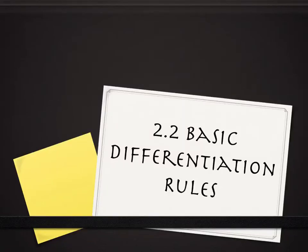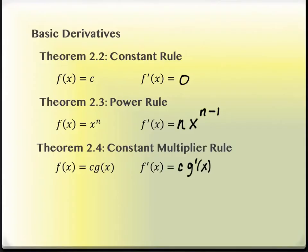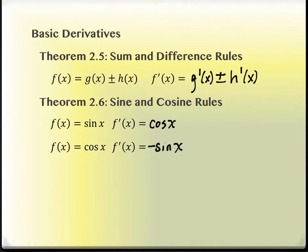We're on section 2.2. We started it last time, and as a quick rundown, we have several new basic derivative rules. The first: the derivative of a constant is 0. The power rule: the derivative of x to the n is nx to the n minus 1. The constant multiplier rule says a constant comes along for the ride when you take the derivative of the function. Sum and difference rules say you take the derivative of each piece and combine them. And the derivative of sine is cosine; the derivative of cosine is negative sine.